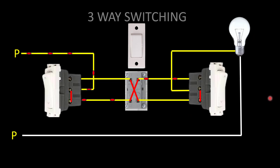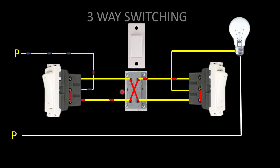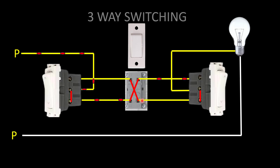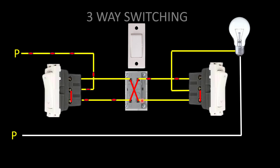How many wires come into one switchboard for three-way switching? The phase wire, two looping wires, and the earth wire come — so four wires in total for three-way switching. In two-way switching also, four wires come. In one-way switching, only phase and earth come.